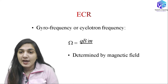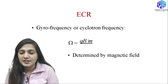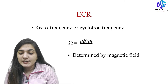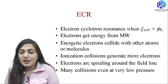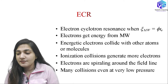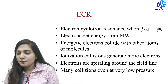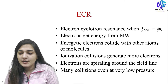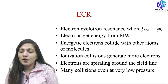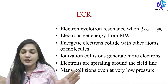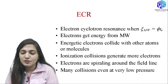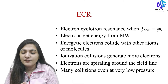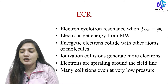ECR is related to the gyrofrequency or cyclotron frequency. The gyrofrequency is qB/m — it is determined by the magnetic field since charge and mass are constant. Electron Cyclotron Resonance occurs when the applied frequency equals the electron gyrofrequency. Electrons gain energy from the microwave, and these energetic electrons collide with other atoms, generating more electrons through ionization collisions. These electrons have spiral motion around the field lines, enabling many collisions even at low pressure.